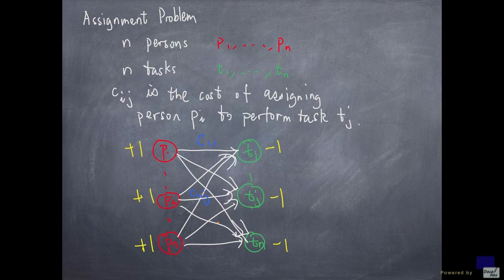And the way to see this is as follows. Suppose I have an assignment. Now I can obtain a flow from an assignment as follows. If pi is assigned to tj, then that arc is set to 1. All other arcs are set to 0.